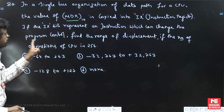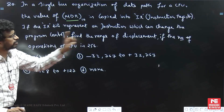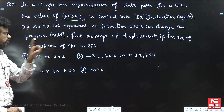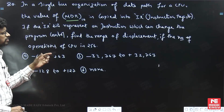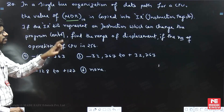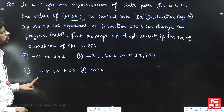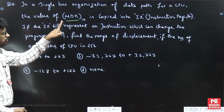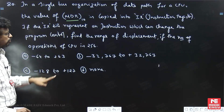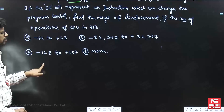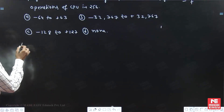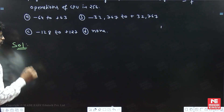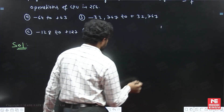Now observe carefully. Find the range of displacement if the number of operations of the CPU is 256. There is a lot of different linked data here, and each one you should understand carefully. First of all, you should know that the instruction is present in the memory. Let us take out the logic in the question one by one.